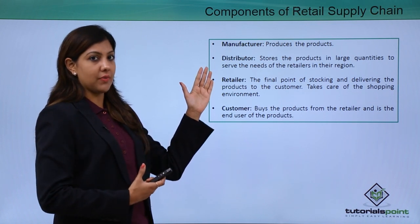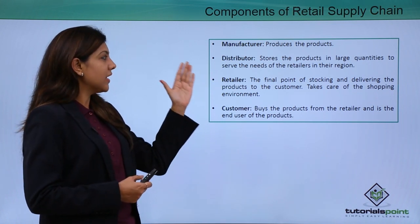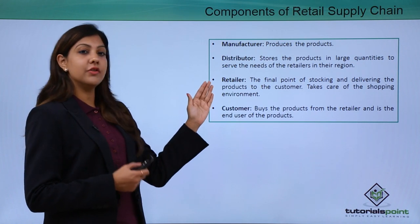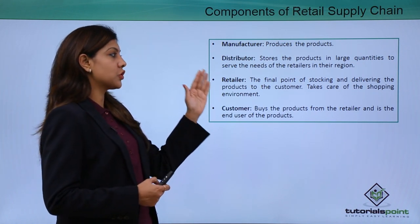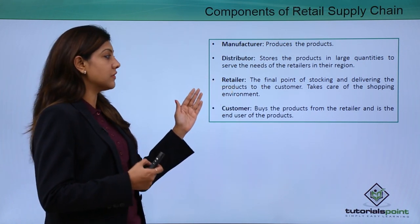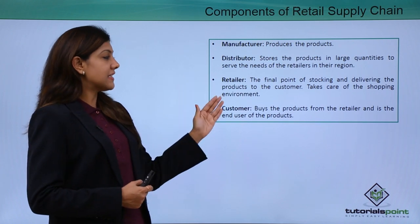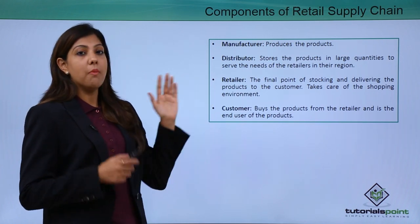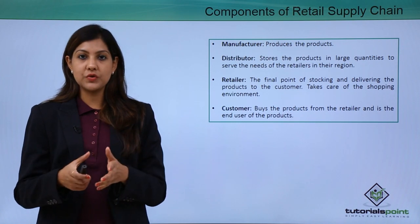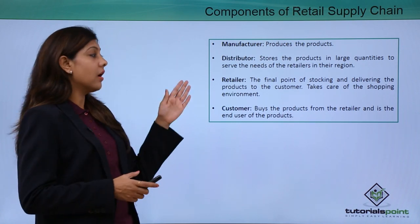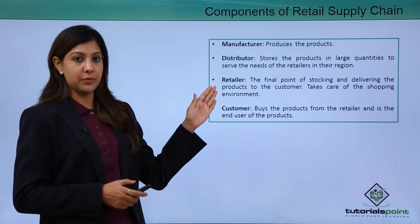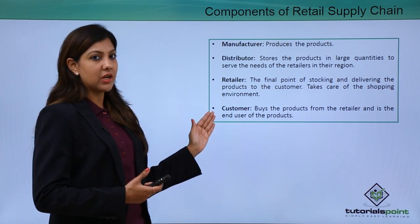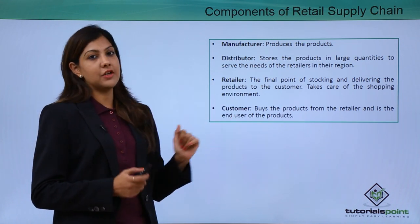The distributor takes the products from the manufacturer in large quantities. From the distributor, it goes to the retailer, who is the final point of stocking and delivering products to the consumer. The retailer takes care of the shopping environment — this is where most retail stores or outlets fall under. From there it goes to the customer, who ultimately buys the product and is the end user.